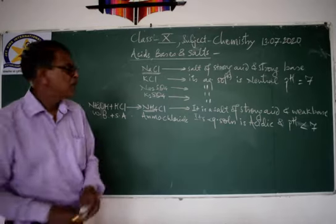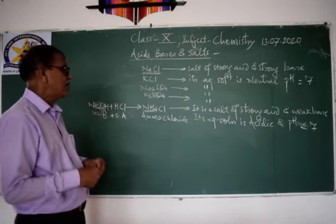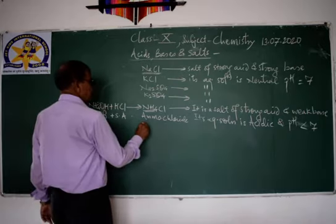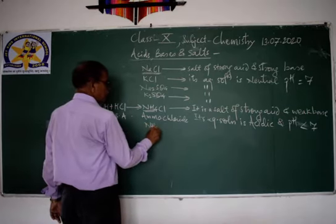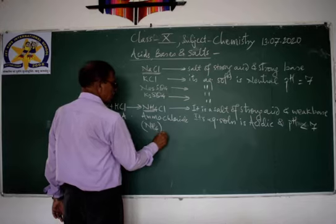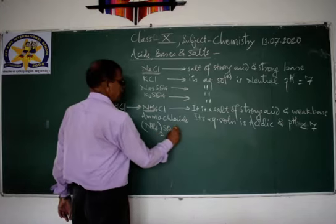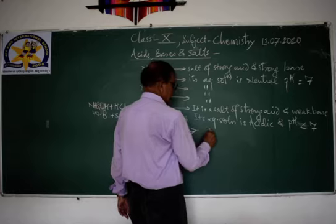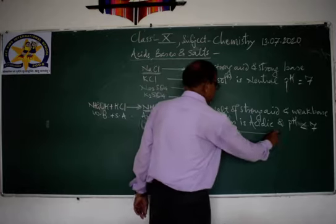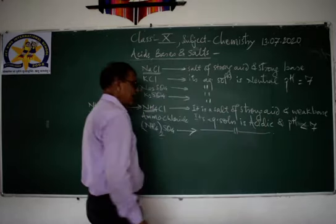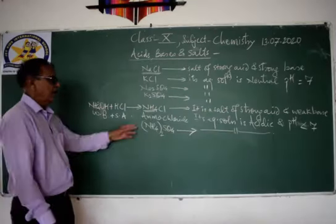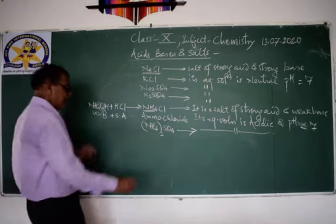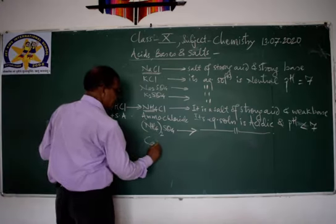In the same way, you can take different salts — for example, (NH4)2SO4. This is again a salt of strong acid and weak base, and its aqueous solution is acidic, with pH less than 7.